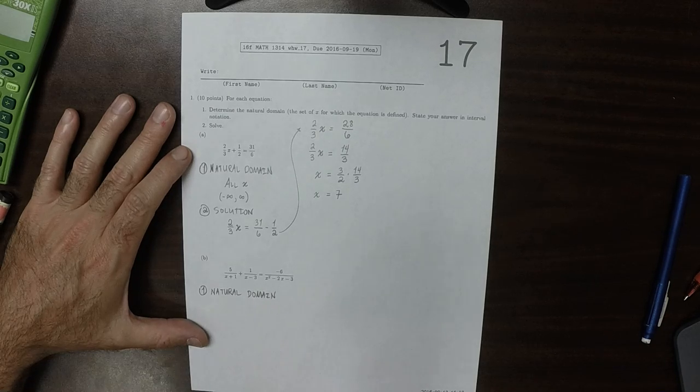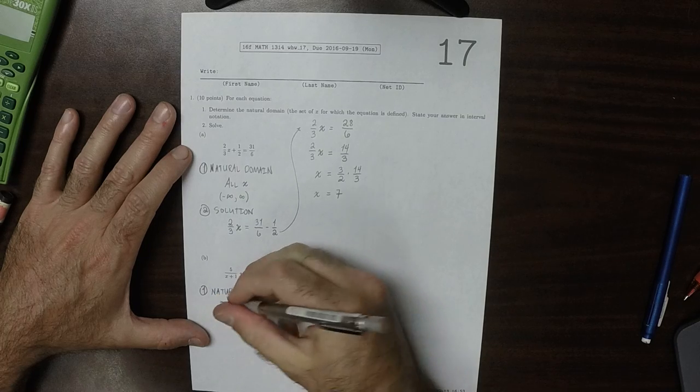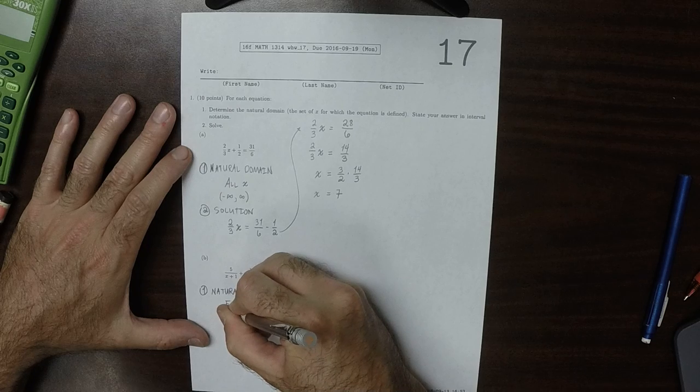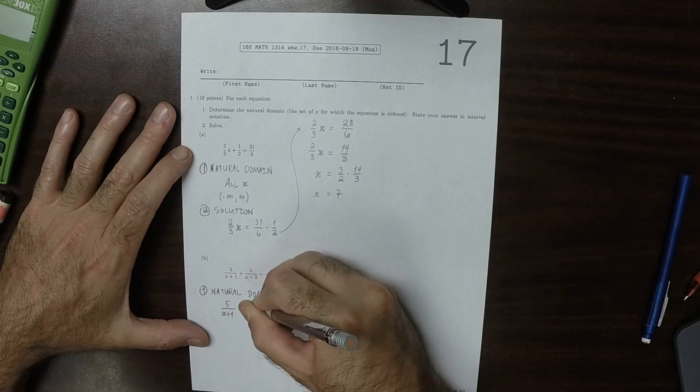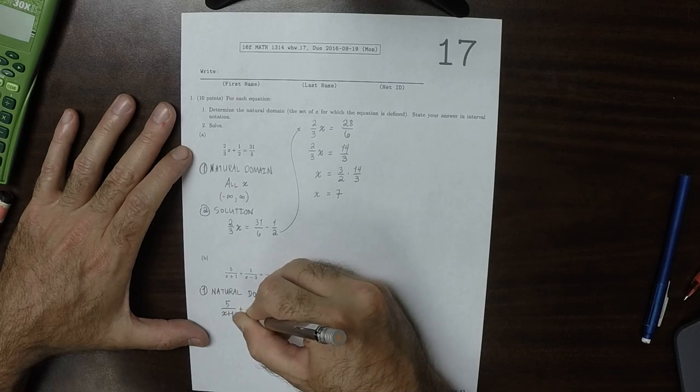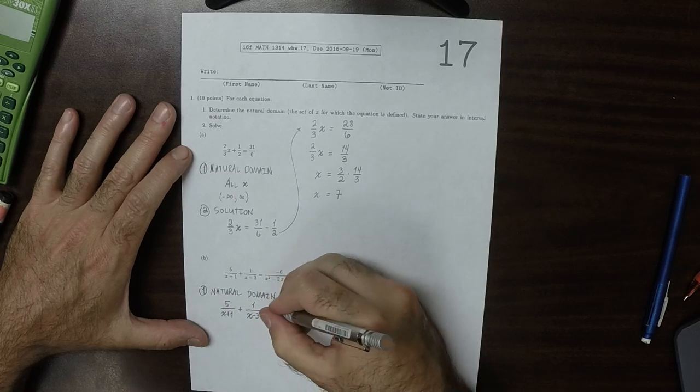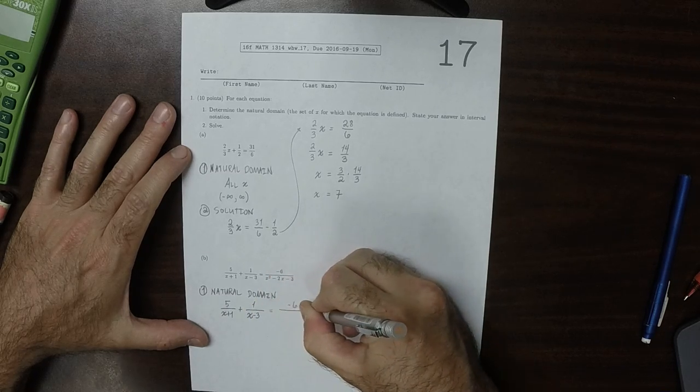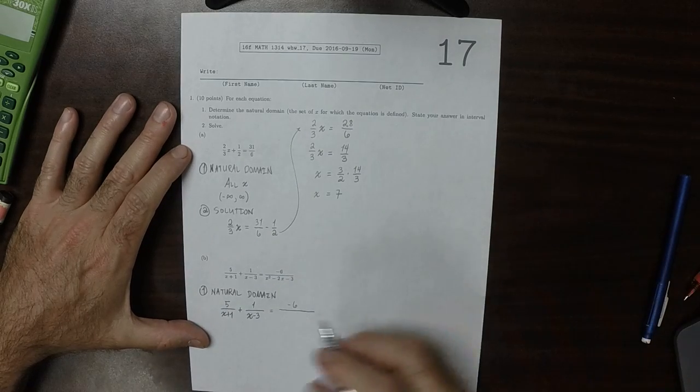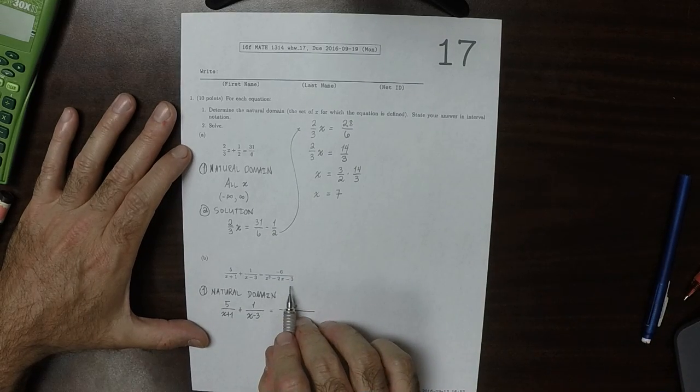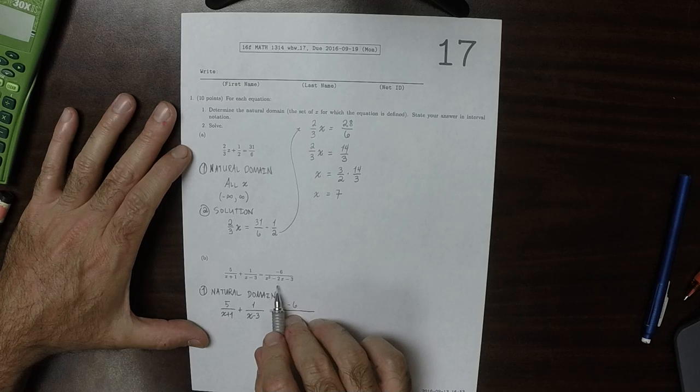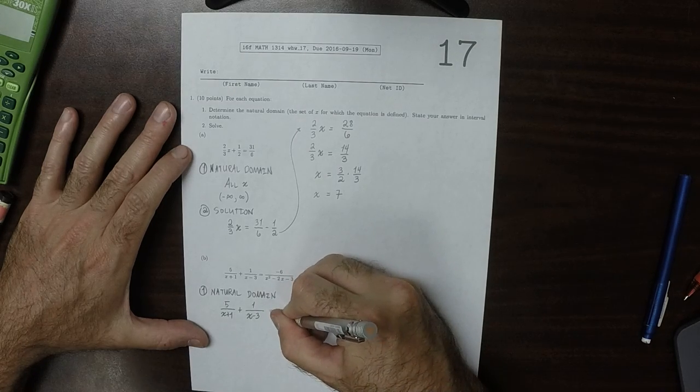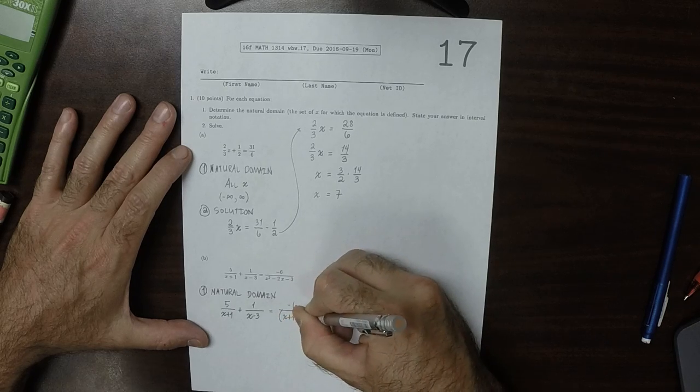So let's factor that and obtain the following. So this is 5 over x plus 1 plus 1 over x minus 3 is negative 6. And then let's factor that quadratic. That would be two numbers whose product is negative 3 and sum is negative 2. So how about x plus 1 multiplied by x minus 3.